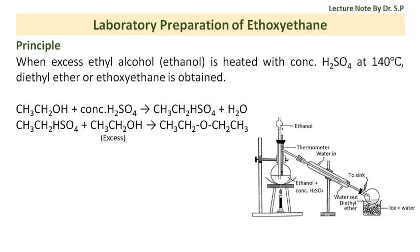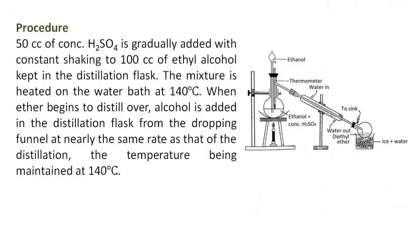Laboratory preparation of ethoxyethane. Principle: When excess ethyl alcohol, ethanol, is heated with concentrated sulfuric acid at 140 degrees Celsius, diethyl ether or ethoxyethane is obtained.